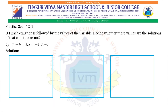Practice Set 12.1, Question 1. Each equation is followed by the values of the variable. Decide whether these values are the solutions of that equation or not. First: x minus 4 equals 3. The values for x are minus 1, 7, and minus 7.